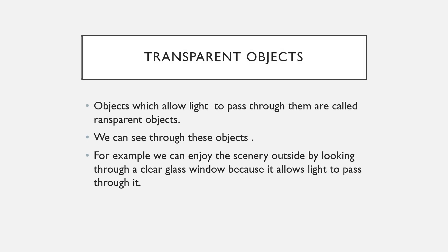Let's begin with transparent objects. Transparent objects are objects through which we can see clearly. Imagine we want to see the scenery outside our house — we have two options: a window with glass panes, or a wooden door. We can see the scenery only through the glass window because glass allows light to pass through it.